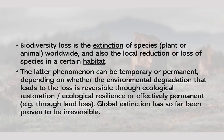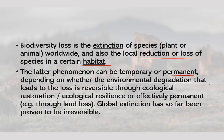Biodiversity loss is the extinction of species — which does not mean only plants; it could be animals, birds or plants worldwide — and also the local reduction or loss of species in a certain habitat. This can be temporary or permanent depending on whether the environmental degradation is reversible through ecological restoration and ecological resilience, or effectively permanent through land loss. Global extinction has so far been proven to be irreversible.